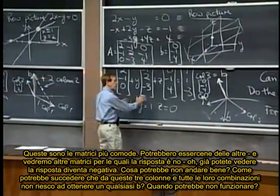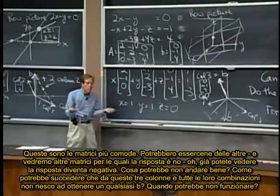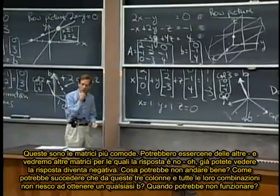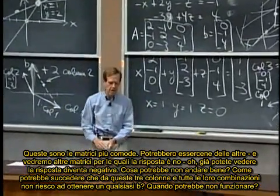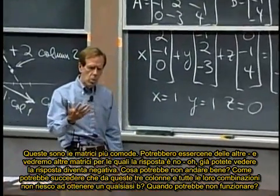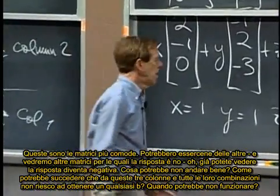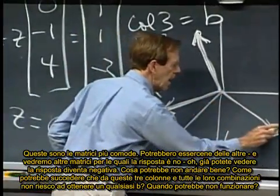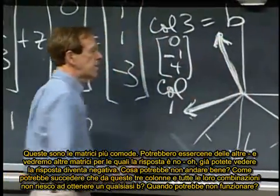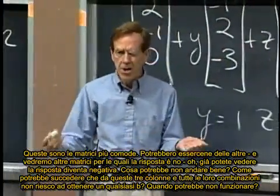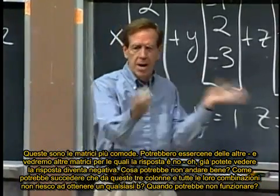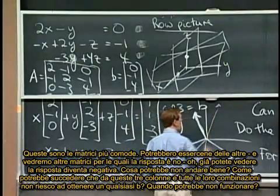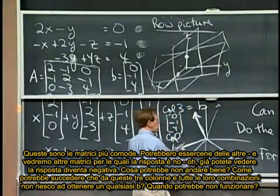There could be other matrices where the answer becomes no. Actually, you can see when it would become no. When could, what could go wrong? How could it go wrong that out of these three columns and all their combinations, when would I not be able to produce some B? When could it go wrong?